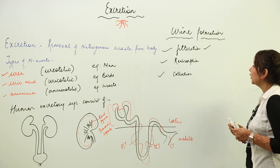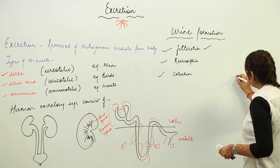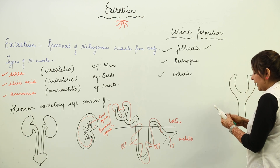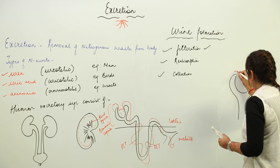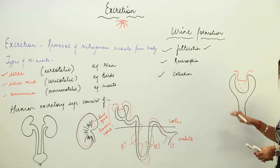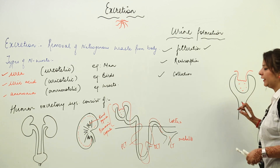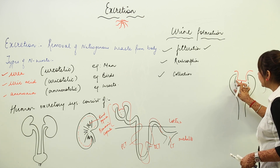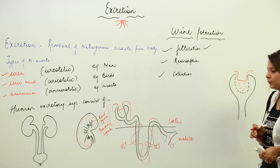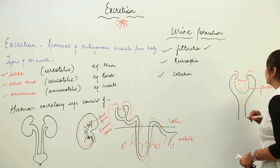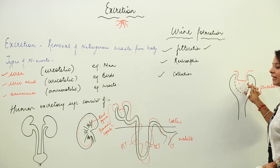First we are going to start with filtration. When we look at the Bowman capsule, there are capillaries present in it — that is the glomerulus. If we see it under a microscope, there are certain pores present in the inner wall of the Bowman capsule, and those pores are called fenestra.